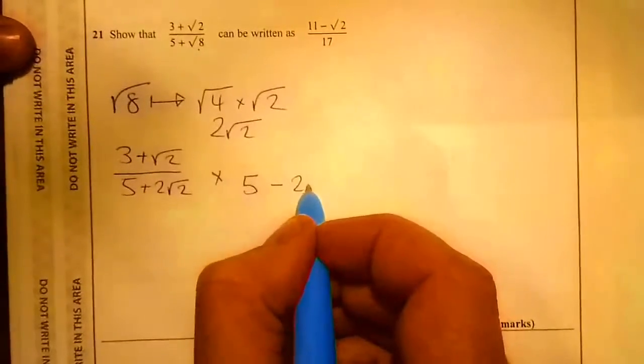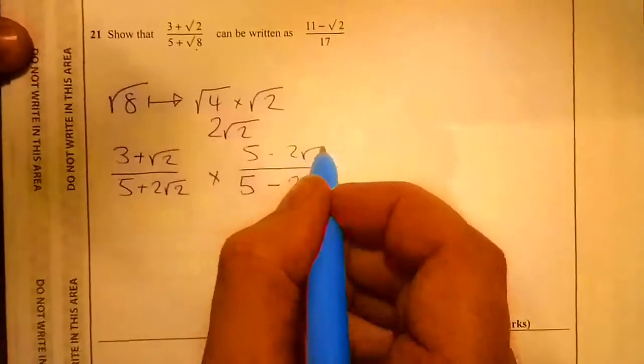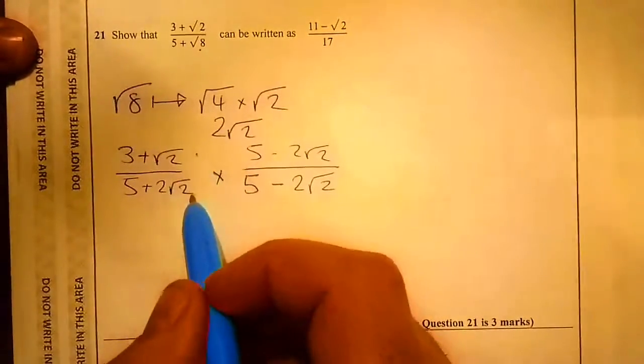So I'll multiply by (5 - 2√2)/(5 - 2√2), because this fraction equals 1. Then we need to work out the numerator and the denominator.